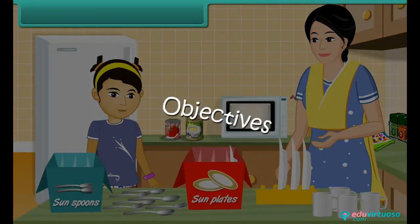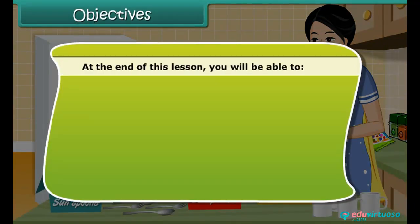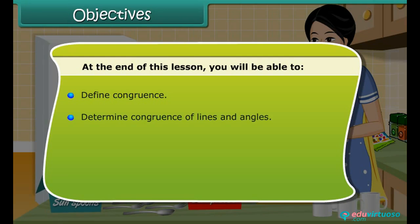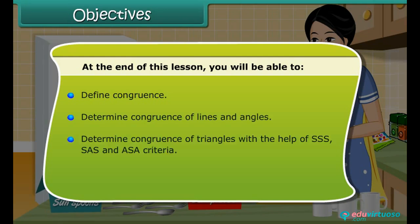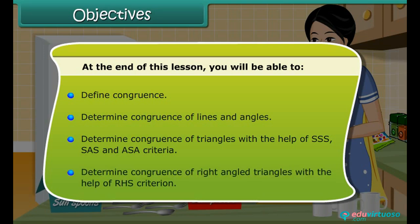Objectives. At the end of this lesson, you will be able to: define congruence; determine congruence of lines and angles; determine congruence of triangles with the help of SSS, SAS, and ASA criteria; and determine congruence of right-angled triangles with the help of the RHS criterion.